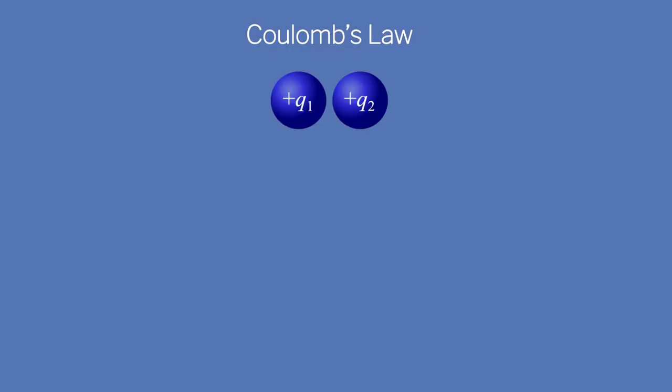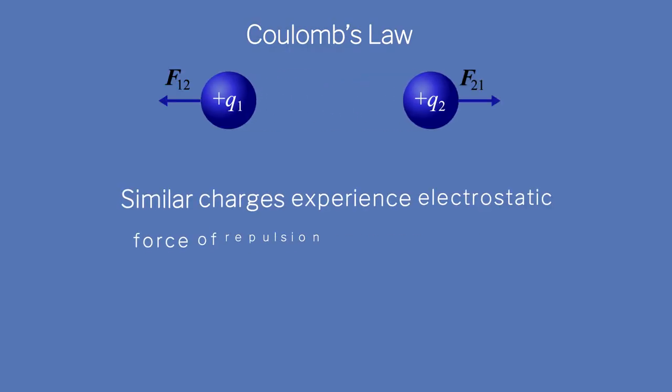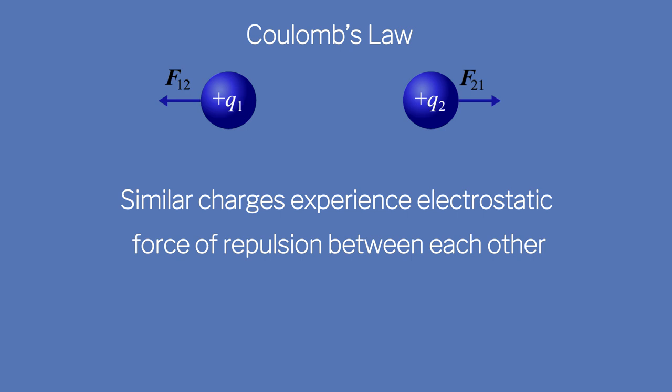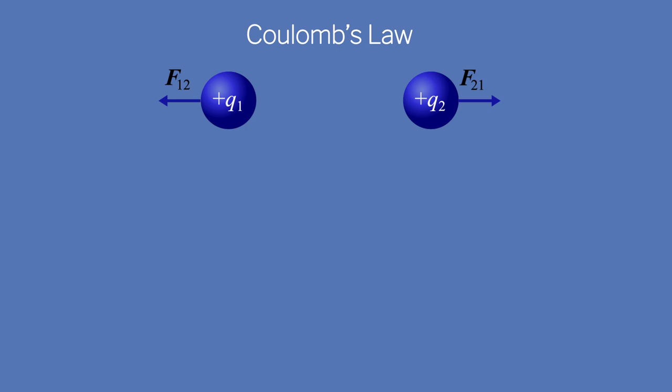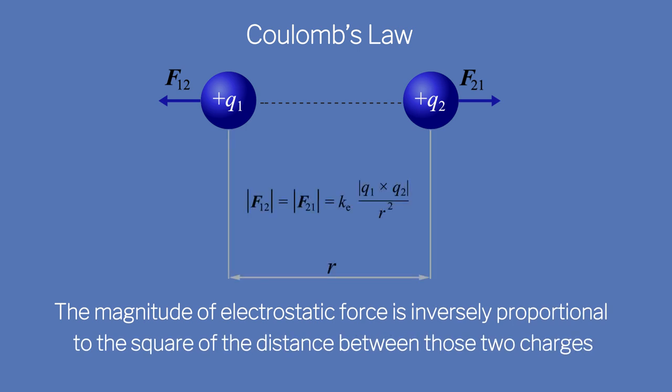We will first learn about repulsion due to like charges. According to Coulomb's law, charges at rest have the following properties: like charges repel each other. Thus, two negative charges or two positive charges repel each other. The repulsion acts along the line between the two charges, and the size of the force varies inversely as the square of the distance between the two charges.